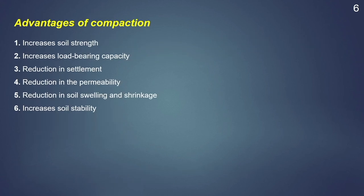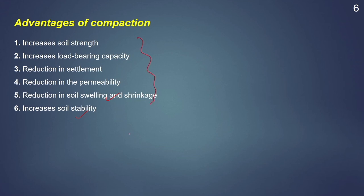The compaction process has different advantages: it increases the soil strength, it increases the load bearing capacity and reduces settlement, it reduces the permeability of the soil, and it reduces the soil swelling and shrinkage characteristics, and it increases the soil stability. So when we do a compaction process, all the different objectives can be achieved — that is, we will get a soil with higher strength, higher bearing capacity, less settlement, less permeability, less swelling and shrinkage, and a higher value of soil stability.